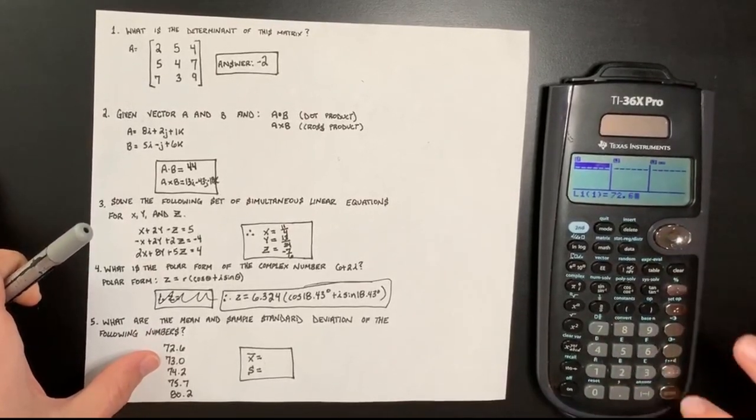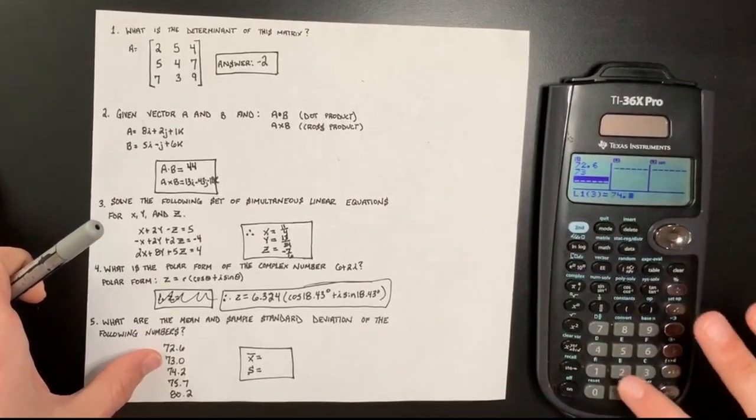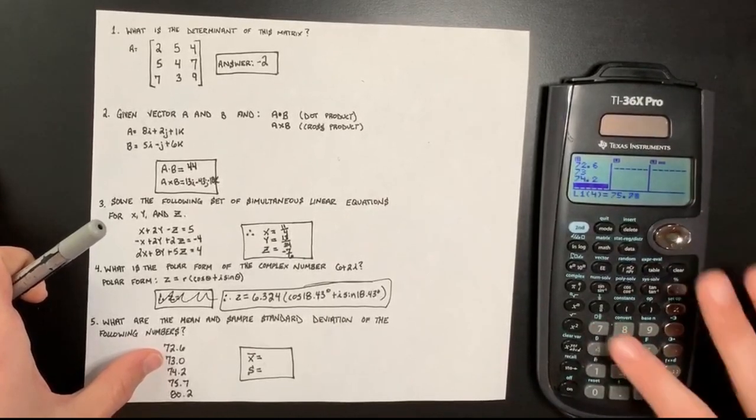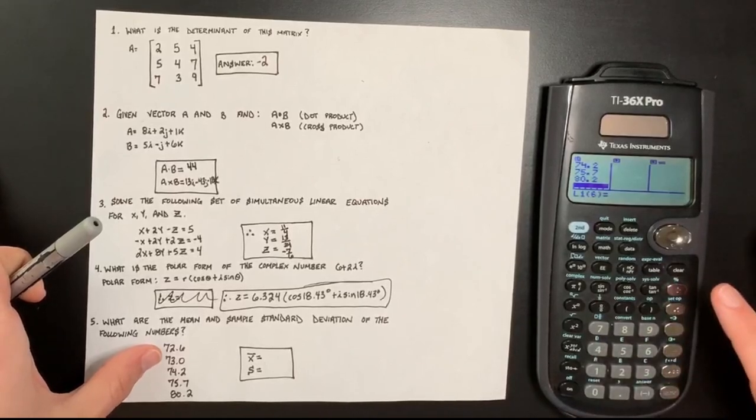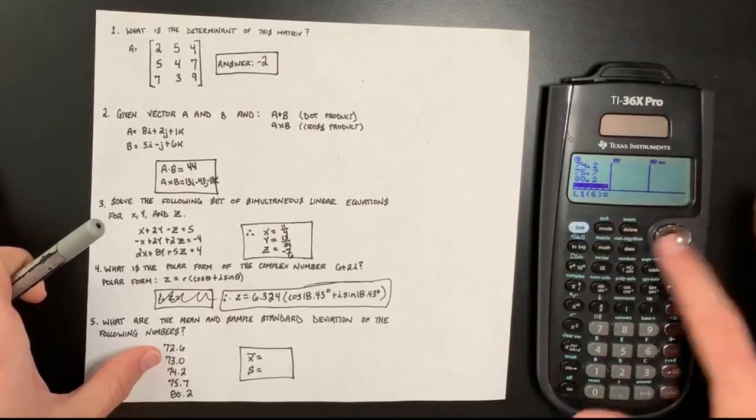So 72.6, enter, 73, 74.2, 75.7, and 80.2. Now you've successfully entered in all the data points you needed into list one.